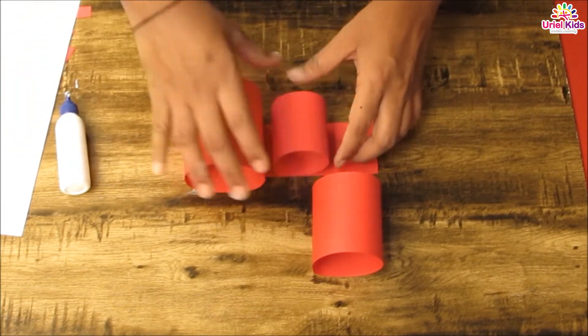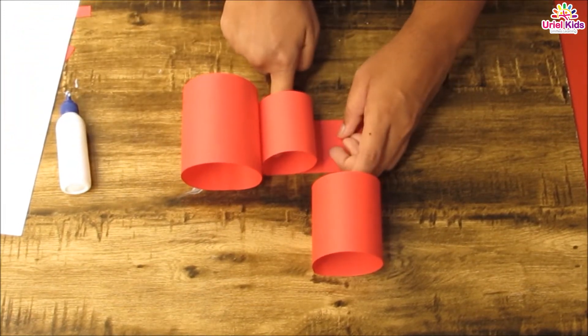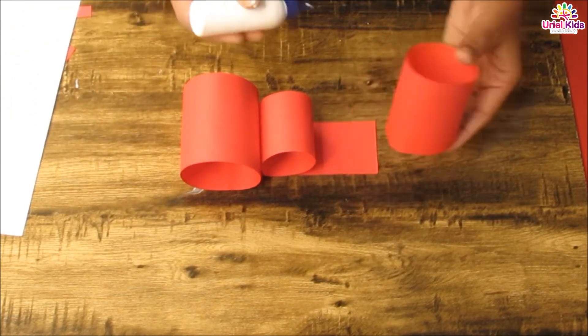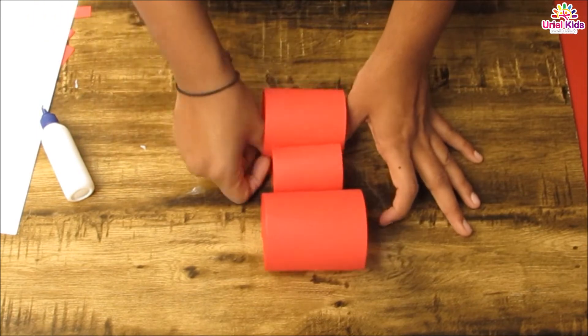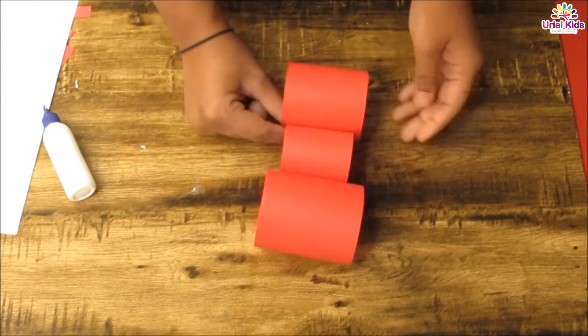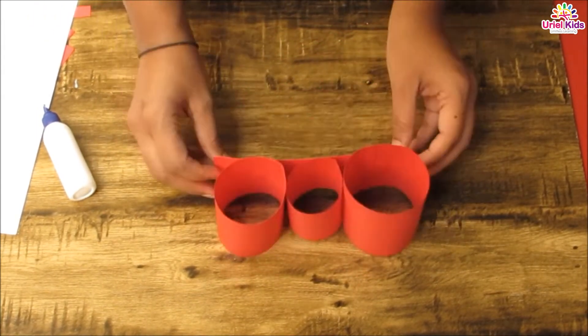On another paper, let's stick the cylinder shapes as shown. Now our ant needs to see, so let us make eyes by cutting two circle shapes and making dots on them.